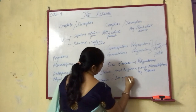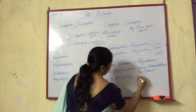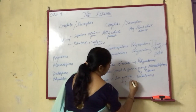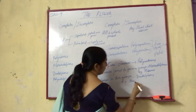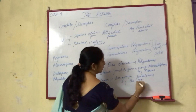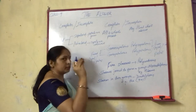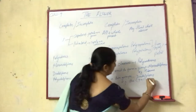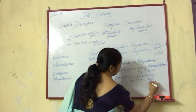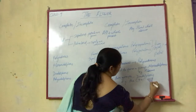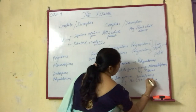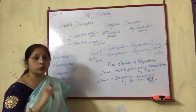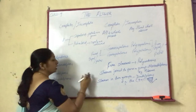The next condition is when stamens are in two groups — that condition is diadelphous. For example, in the pea flower, the arrangement is nine plus one: nine stamens form one group and one stamen is separate, making two groups. If the arrangement is like this — nine and one — then it is a diadelphous condition, forming two groups.